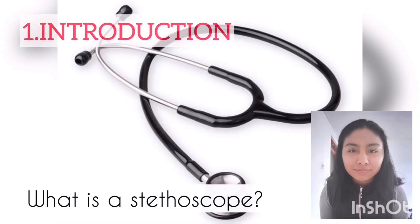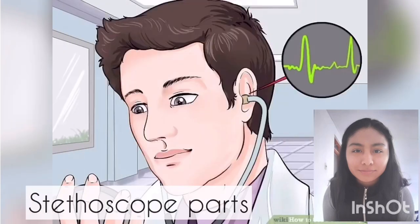What is a stethoscope? It is a medical instrument that is used to transmit low-volume sounds, such as heartbeat, intestinal, venous, or fetal sounds, to the ear of the listener. A stethoscope may consist of two ear pieces connected by means of flexible tubing to a diaphragm that is placed against the skin of the patient. The stethoscope has become one of the symbols of the medical profession. A French physician called Laennec invented it, and it has undergone many modifications since then.